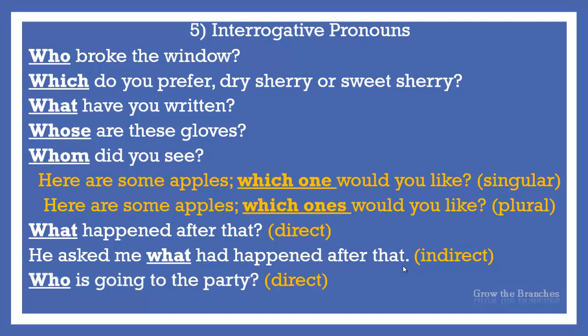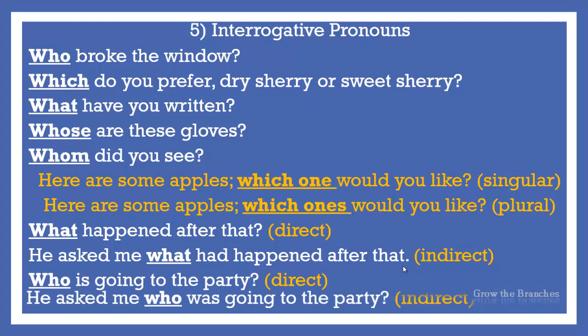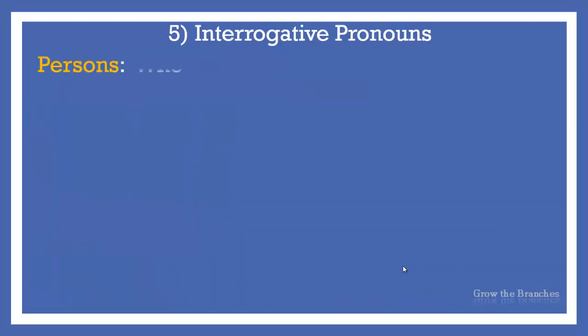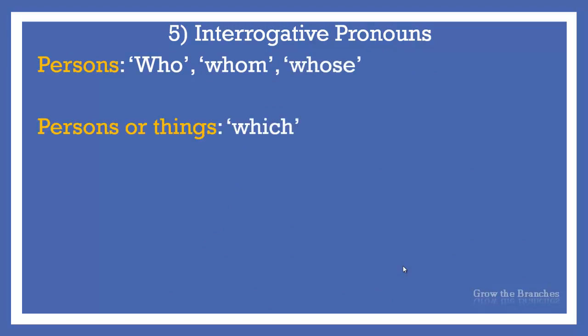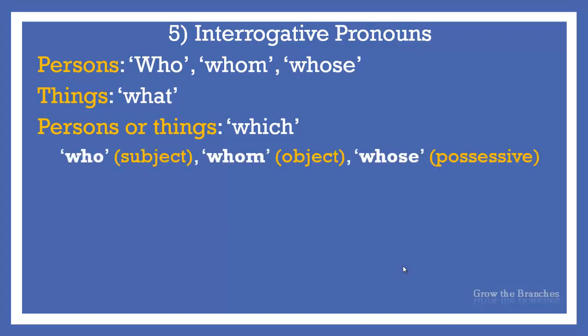Another example: Who is going to the party? — He asked me who was going to the party. Who, whom, and whose are used for persons. What is used for things and which is used for persons or things. If we want to ask about persons, we use who to ask about the subject, whom about the object, and whose for the possessive.